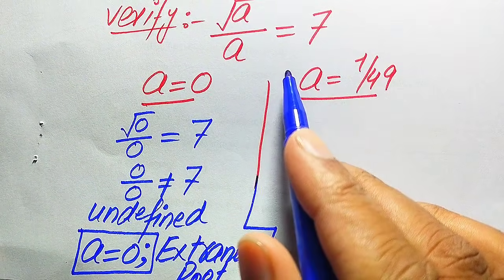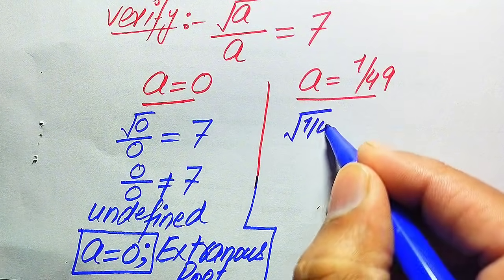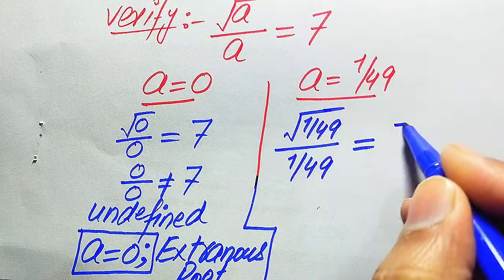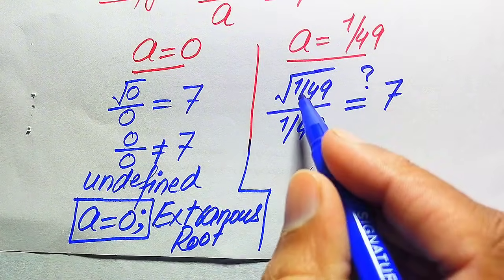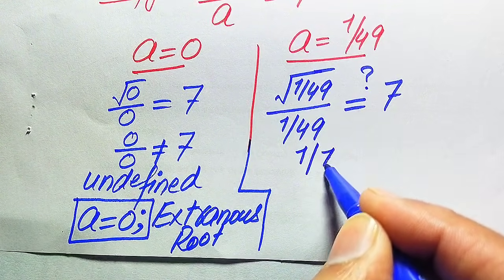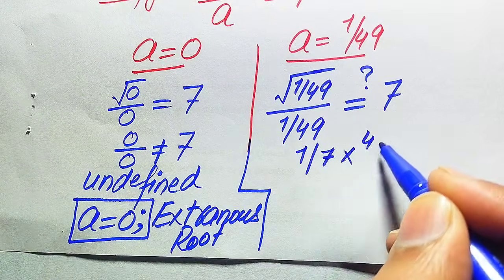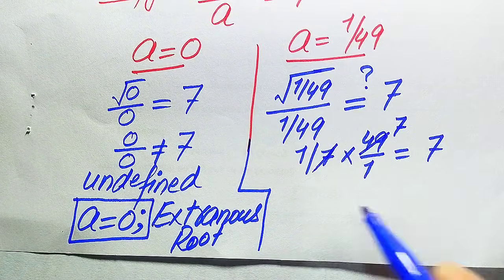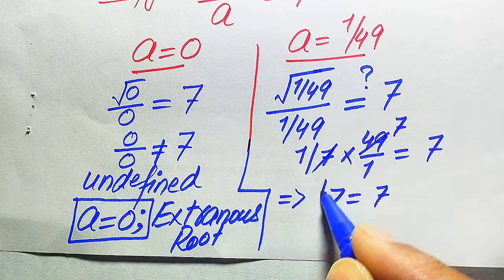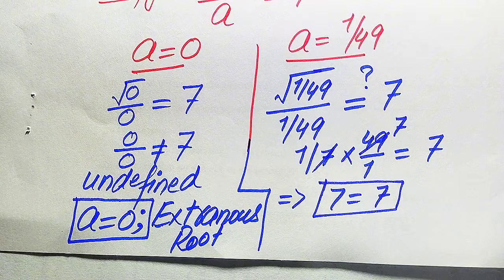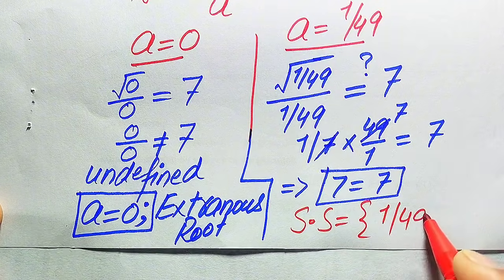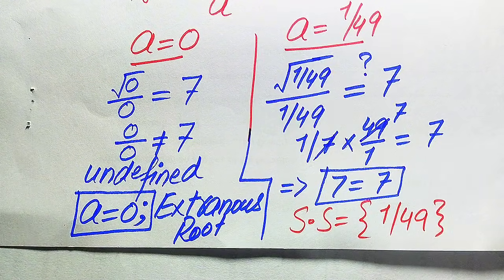Now we verify the second value a equals 1 over 49. Substituting gives square root of (1/49), all divided by (1/49), and we check whether this equals 7. Square root of 1 is 1 and square root of 49 is 7, so we get (1/7) divided by (1/49). Taking the reciprocal gives 49 over 1, and 7 times 7 is 49, so we get 7 equals 7. Both sides are equal, confirming a equals 1 over 49 is the solution. The solution set is {1/49}.